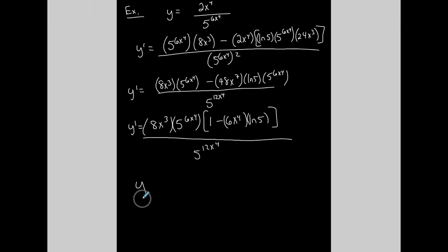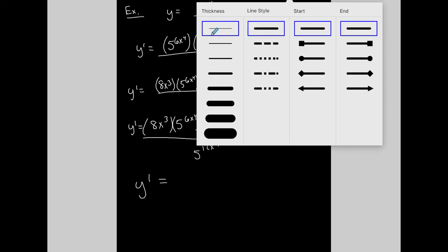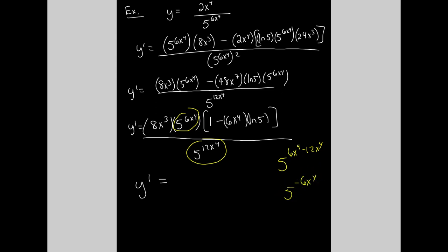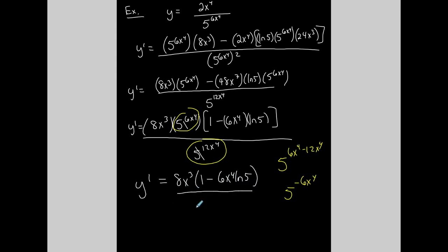Using properties of exponents, 5 to the 6x to the fourth divided by 5 to the 12x to the fourth means keeping the base and subtracting exponents, giving 5 to the negative 6x to the fourth — so that extra factor moves to the bottom. The final simplified first derivative is 8x cubed times the quantity 1 minus 6x to the fourth times ln(5), all over 5 to the 6x to the fourth.